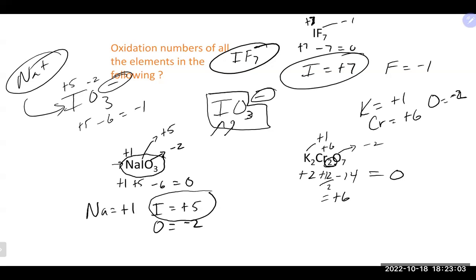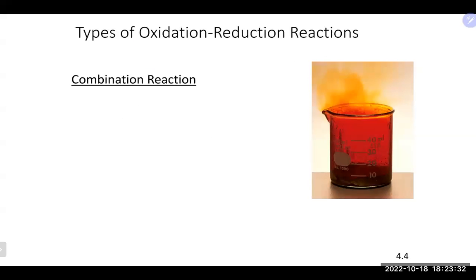When assigning oxidation states, in most cases there will be an oxygen involved — always a good place to start because it is reliably −2. If there is no oxygen, start with the most electronegative element present, like fluorine, which is always −1. Assigning oxidation states is really important for understanding what is happening in redox reactions.